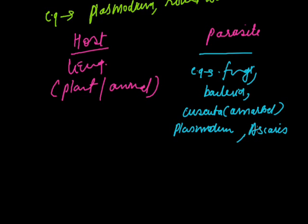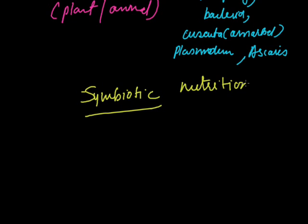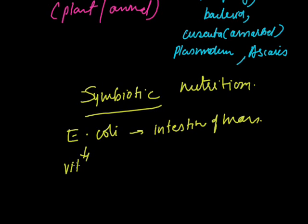Often two organisms might live in association and derive nutrition from each other — this is called symbiotic nutrition or a symbiotic relationship. A common example is E. coli, a bacteria that lives in the intestine of man. E. coli synthesizes vitamin B12 which is used by man, and in return E. coli receives simple food from the intestine of man. So both are getting benefited.